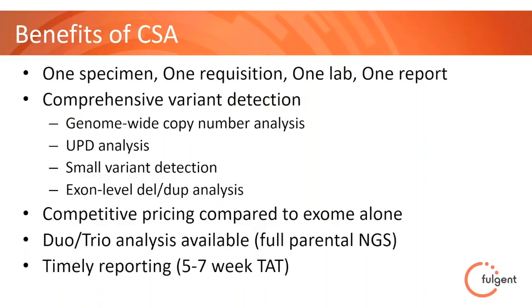Duo, trio, and even quad analysis is available, and we'll do the full sequencing — not just looking up interesting variants. The turnaround time for this test is five to seven weeks, depending on a lot of factors. If the genome-wide copy number analysis is positive — say you have a DiGeorge deletion on 22q — that might get out in two to three weeks. Whereas if we're going through the entire whole exome process with confirmation and may need Sanger confirmation for a low-quality SNV or indel, that might push towards seven weeks. We really aim for five weeks.